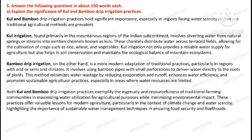Question number five: Answer the following questions in about 150 words each. A: Explain the significance of cool and bamboo drip irrigation practices.